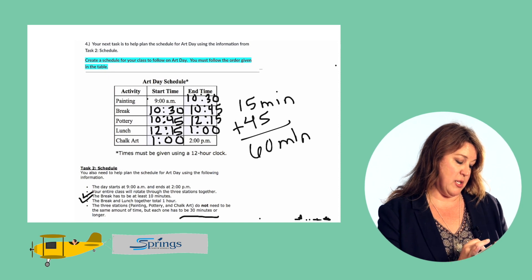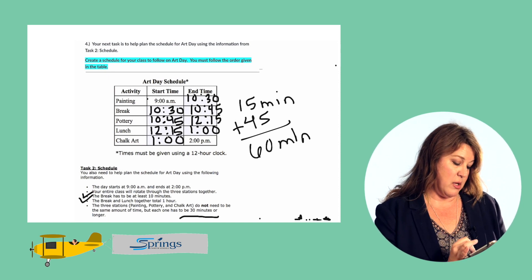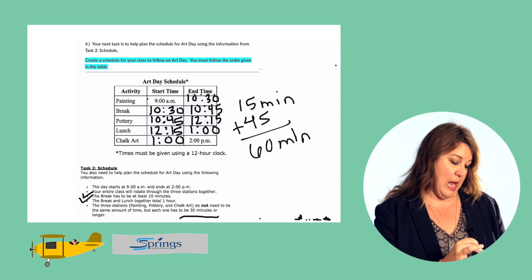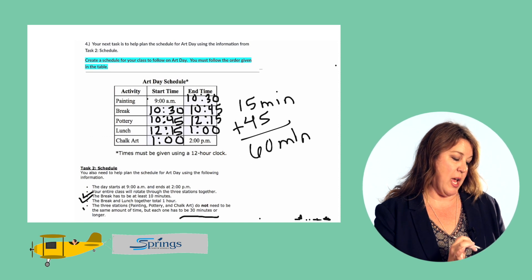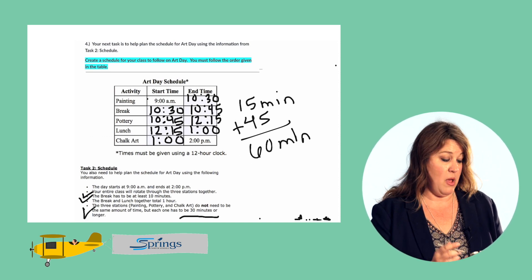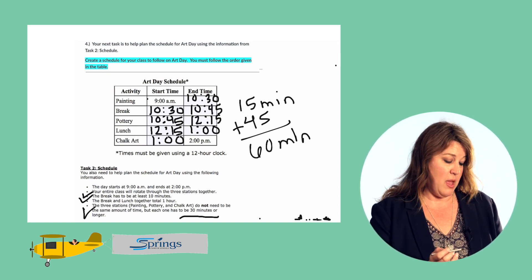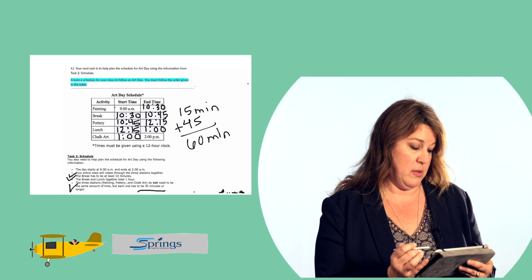The three stations — painting, pottery, and chalk art — do not need to be the same amount of time, but each one has to be thirty minutes or longer. Painting is an hour and a half, pottery is an hour and a half, and chalk art is an hour, so each one is thirty minutes or longer — check. So this is one example of an art day schedule that meets all of the requirements for art day. You could come up with a different schedule. And that's it for problem four.